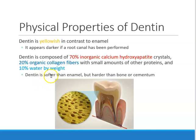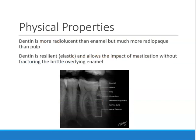Dentin is a little softer than enamel. Enamel is the hardest tissue in your body, but dentin is still a hard tissue — it's harder than bone, it's harder than cementum. Cementum, by the way, is what covers the roots — that yellow-brown layer covering the root is called cementum. So dentin is harder than bone, but it is softer than enamel.